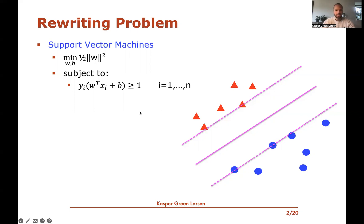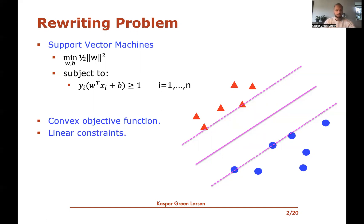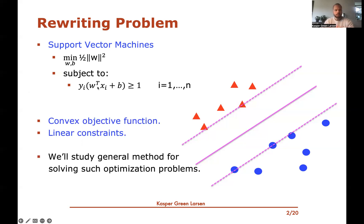We also said this was a convex optimization problem, in the sense that the objective function is convex and the constraints are also convex. So in this video, we will introduce some basic techniques for solving convex optimization problems that will give us a lot of insight into this concrete SVM optimization problem. These constraints are linear, and we'll look at a very general method that can solve optimization problems of this form as well as other problems.